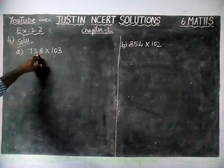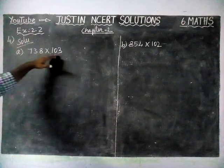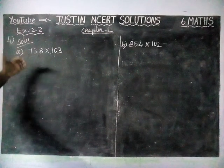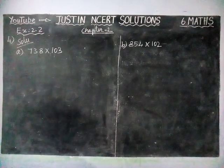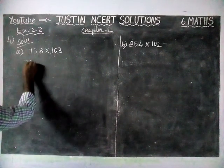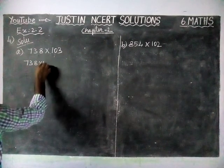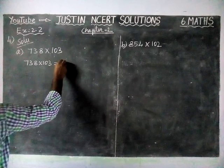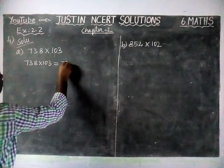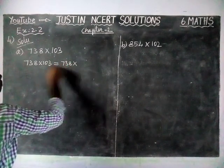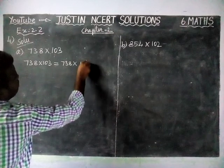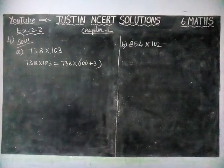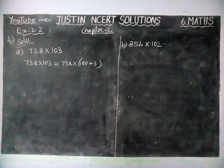If it is normal multiplication, we have to write this number first, then 103, and then a 3-step multiplication will be needed. But now we are going to use properties to find the answer. So, 738 into 103 is equal to — we can separate 103 as 738 into (100 plus 3).